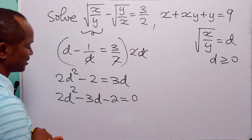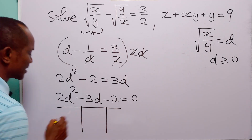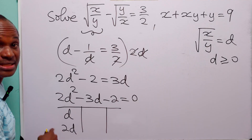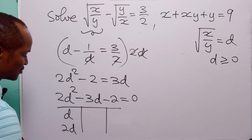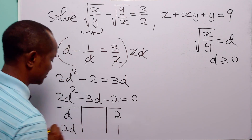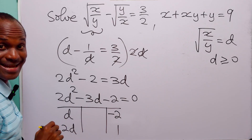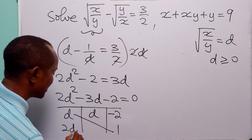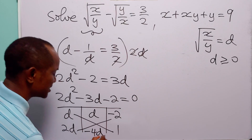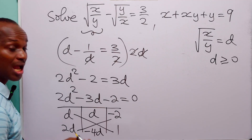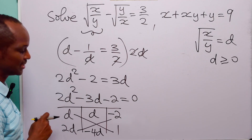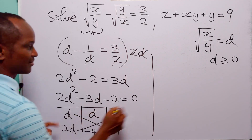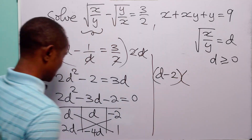We can factorize this quadratic equation using the table method. The factors of 2d squared are d and 2d, because d times 2d gives us 2d squared. The factors of minus 2 are 2 and 1. Because this is negative, let this be negative — minus 2 times 1 gives us minus 2. d times 1 gives d, and 2d times minus 2 gives minus 4d. Minus 4d plus d gives us minus 3d. So the left-hand side factorizes as d minus 2, multiplied by 2d plus 1.